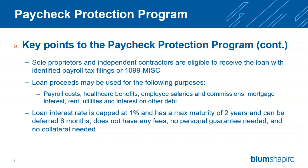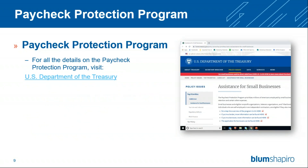The PPP includes sole proprietors and independent contractors. Loan proceeds may be used for payroll, healthcare, employee salaries, commissions, mortgage interest, rent, utilities, and interest on other debt. The interest is capped at 1% with a max maturity of two years. It can be deferred up to six months, with no fees, personal guarantees, or collateral needed. All terms will be the same for each business receiving the PPP loan. The key point is that the PPP loan can be forgiven if you use it on payroll, rent, utilities, and interest.